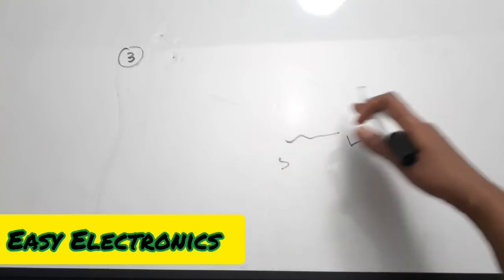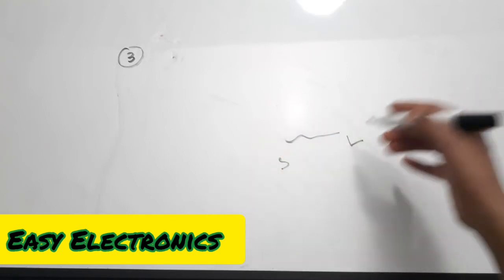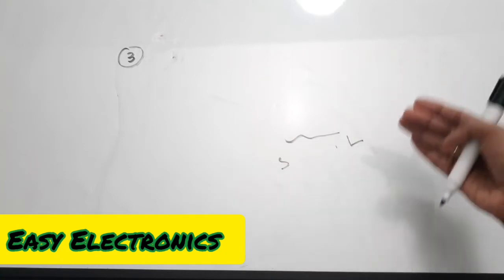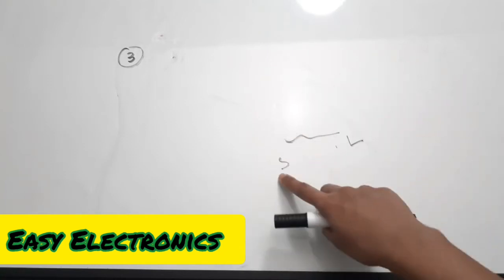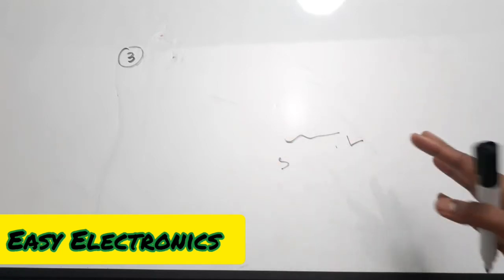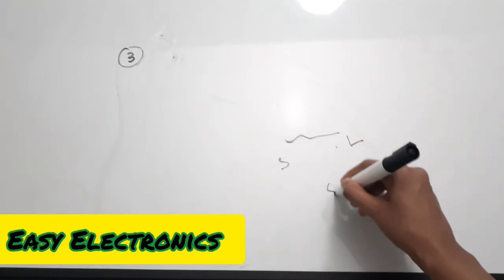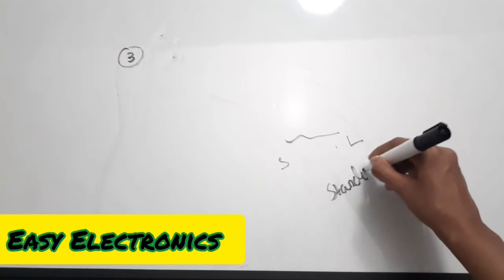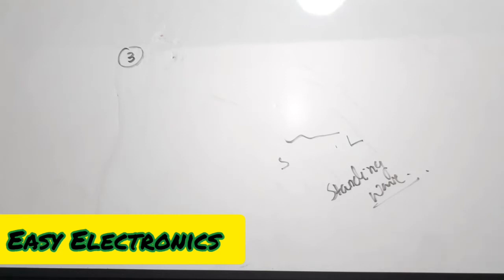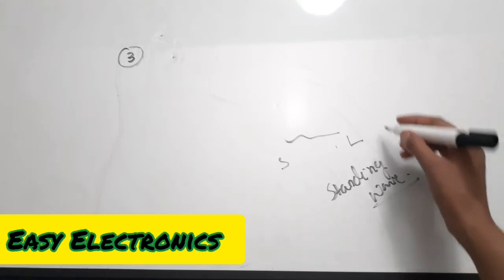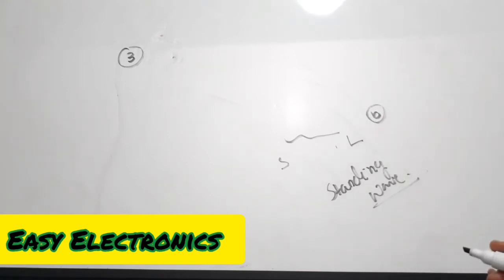the standing waves are generated and reflections happen from the receiver or load side towards the transmitter or source side. Due to these reflections, standing waves are generated. The reflections and standing wave generation are all happening due to the impedance mismatch. So the correct answer is option B, impedance mismatch, for the third question.